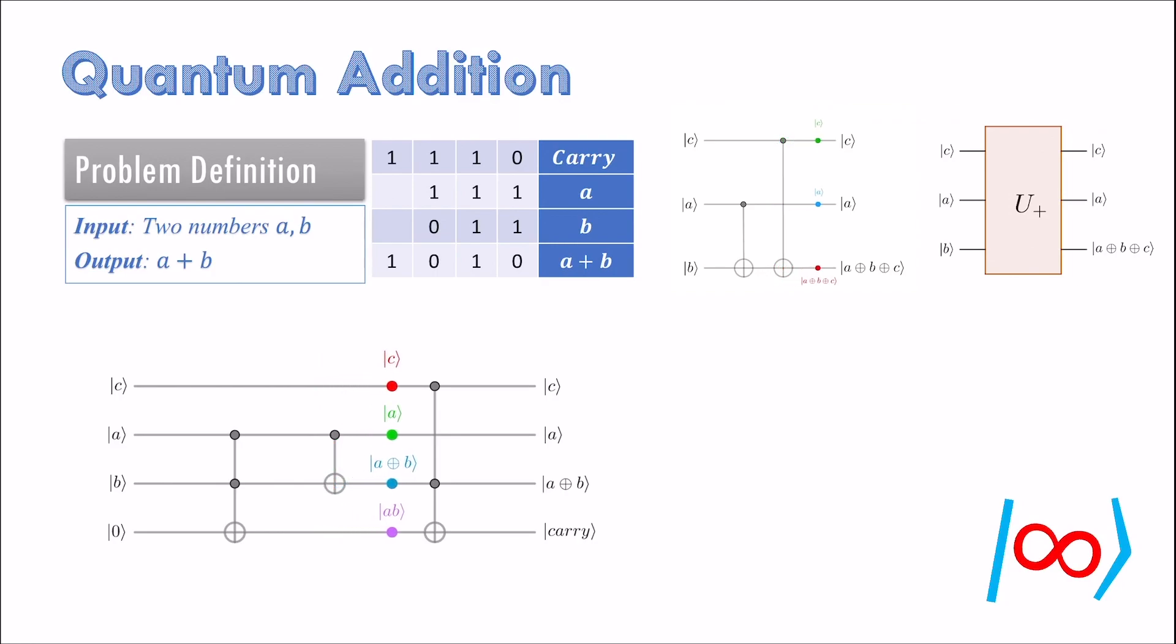The previous carryover qubit C gets added to the sum of input bits. This changes the next carryover bit only when both C is 1 and the sum A plus B is 1. To account for this we first add A on top of B, and then apply second CCNOT gate with qubit C and qubit A plus B as control. I encourage you to stop the video and verify that this approach does compute the carryover for the next bit pair addition. We represent this circuit by the following U carry gate.